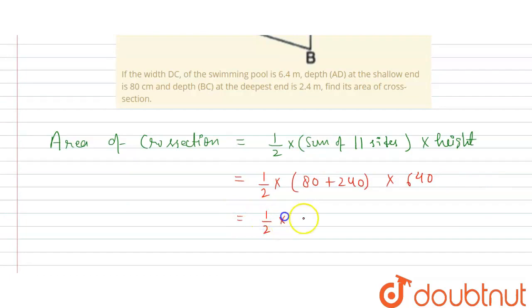This is equals to one by two multiply 320 multiply by 640.